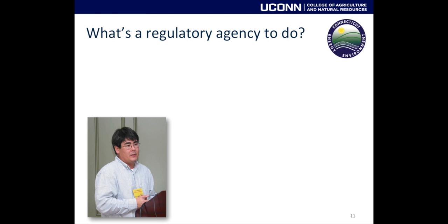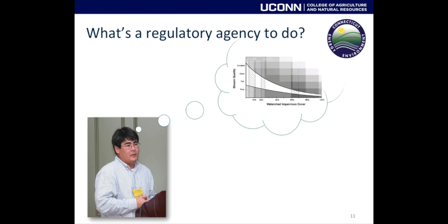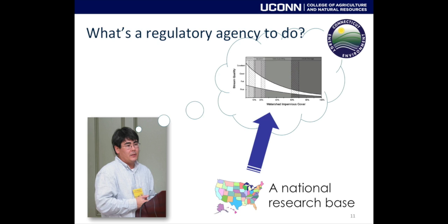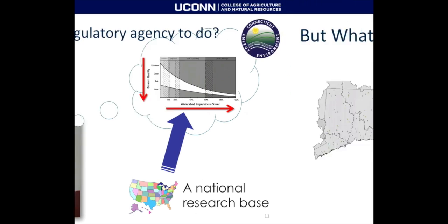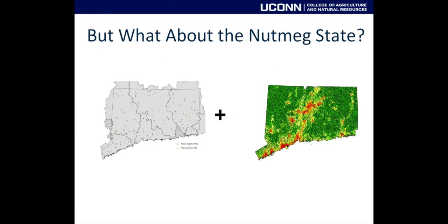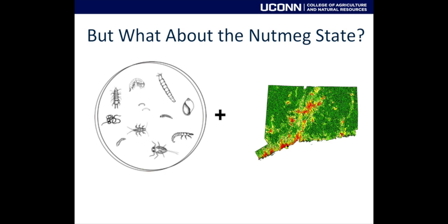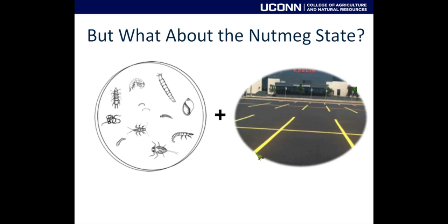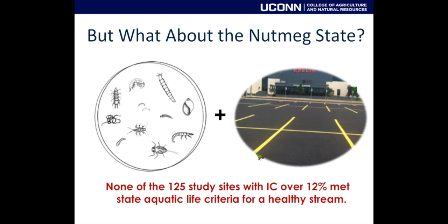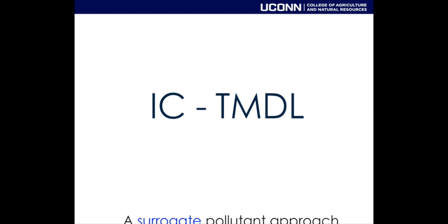A really smart guy at Connecticut DEEP identified a national database built over the last 30 years showing that as watershed impervious cover goes up, the quality of the receiving stream goes down. For Connecticut specifically, DEEP matched their macroinvertebrate data — a great indicator of long-term stream health — with CLEAR's impervious cover data and found that across 125 sites, none with impervious cover over 12% in their watershed met the state criteria for a healthy stream.